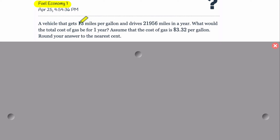We're told here that a vehicle gets 13 miles per gallon, and it drives 21,956 miles in a year. What would the total cost of gas be for one year? What would the cost be? Assume that the cost of gas is $3.32 per gallon and round your answer to the nearest cent.